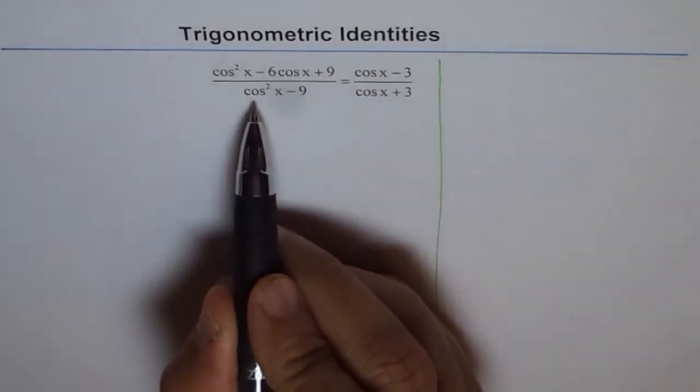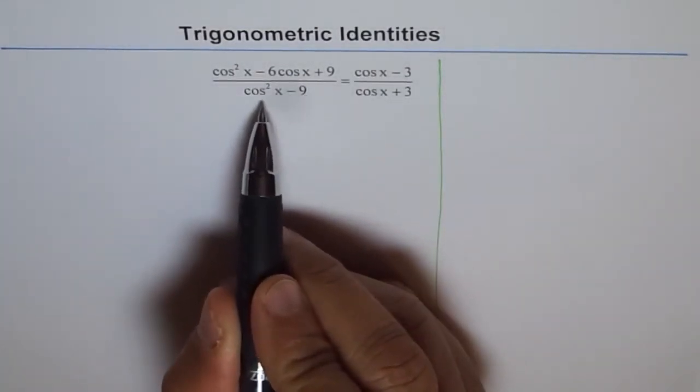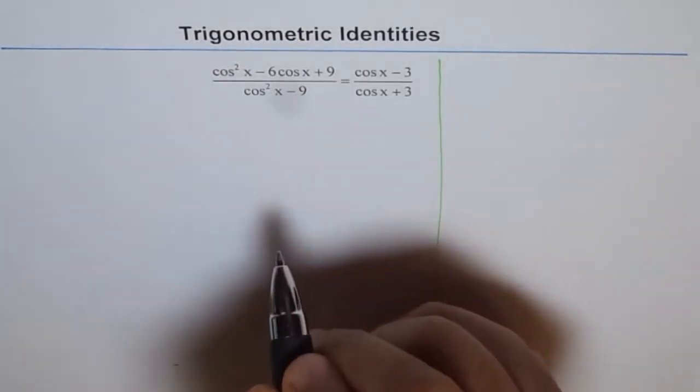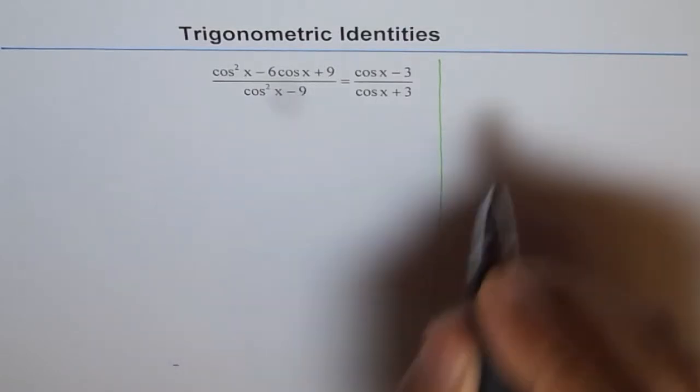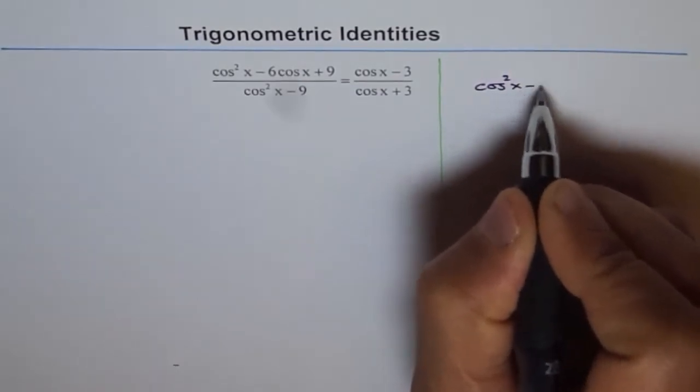So when I see cos square x minus 9, I see it as cos square x minus 3 square. Do you see that? That is the denominator, cos square x minus 3 square. So I am looking at denominator as cos square x minus 3 square.